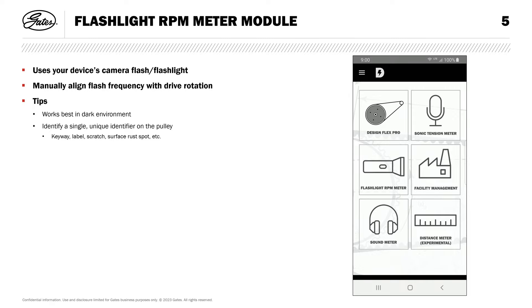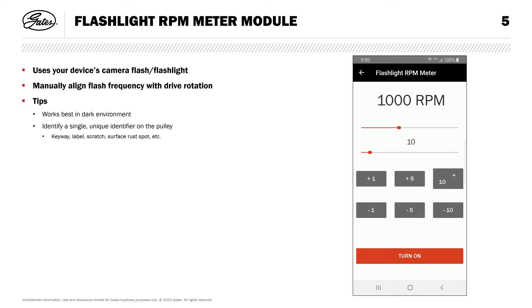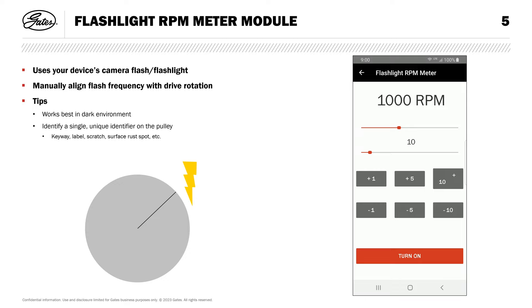This is really important, and we'll get into why in just a moment. Basically, we're using the phone flash to make sort of a movie for our eyes. Each flash is like a frame of film, and we want our movie to be really boring. As the animation on screen shows, during the first flash we'll see our unique identifier in a certain location. Between the first and second flash, the pulley will complete a full rotation, so that when the second flash happens the identifier will be back in the same place. To our eyes, it will appear that the identifier is not moving at all. That's how we know the flash frequency and the rotational speed are aligned.